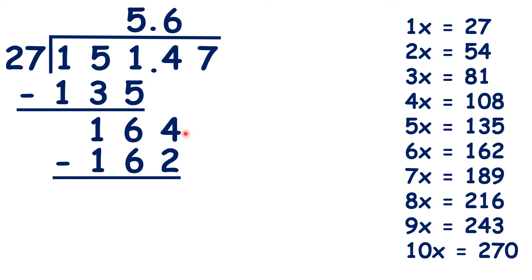Now 164 minus 162 is 2, and we can bring down the 7, so we have 27 divided by 27, which is 1, and we have nothing left to divide, so we have our answer.